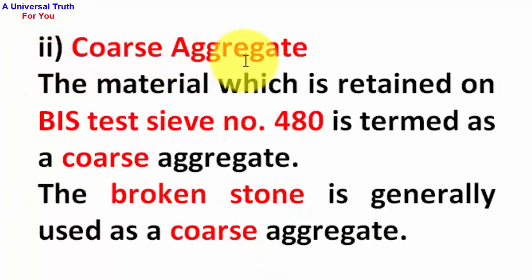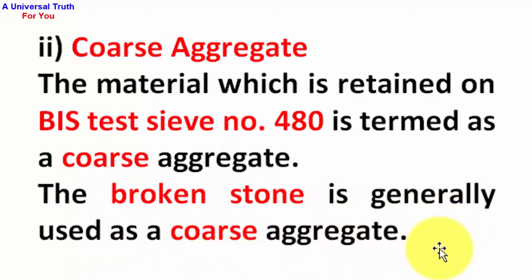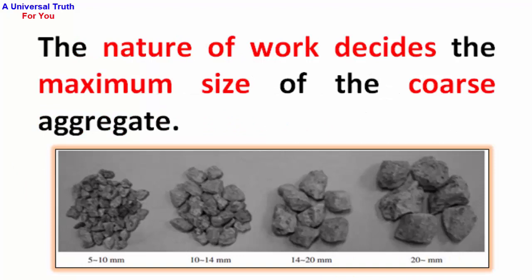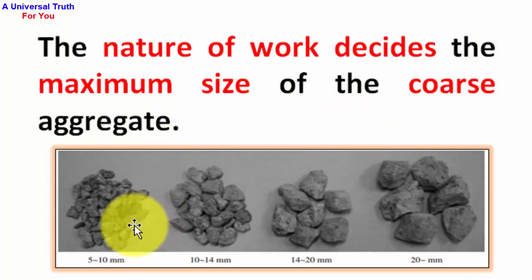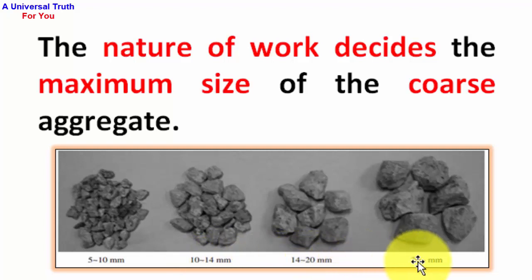Coarse aggregate: the material which is retained on BIS test sieve number 480 is termed as coarse aggregate. Broken stone is generally used as a coarse aggregate. The nature of work decides the maximum size of the coarse aggregate. As shown in the picture, sizes range from 5–10 mm, 10–14 mm, 14–20 mm, and about 20 mm.